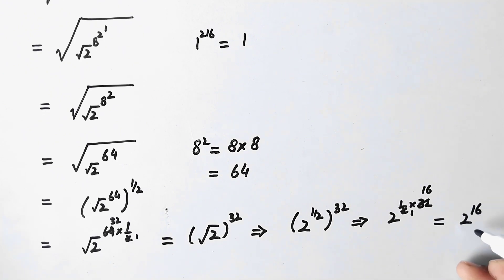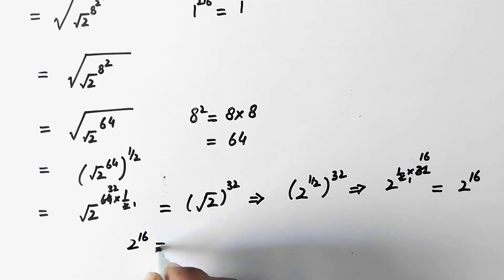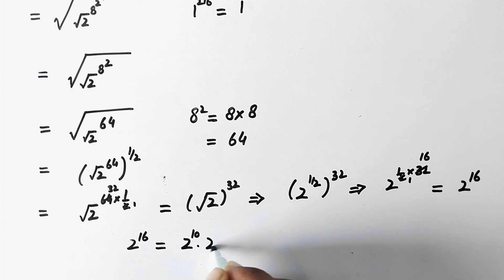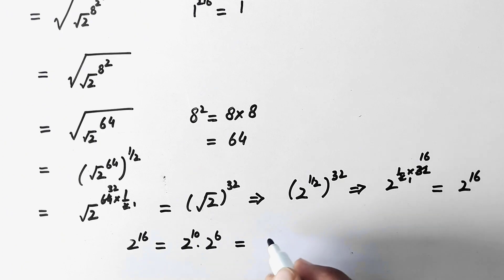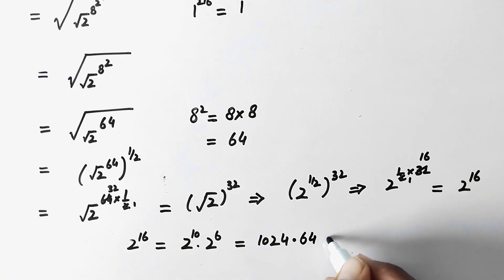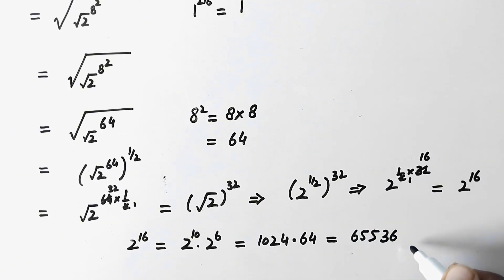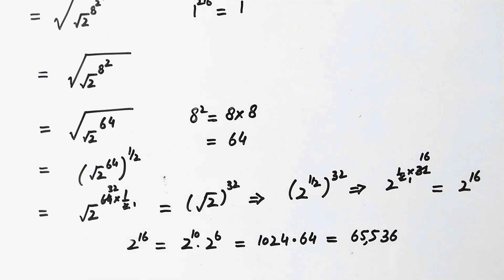So the result is 2 to power 16. To simplify the calculation we write 2 to power 16 as 2 to power 10 times 2 to power 6. Since 2 to power 10 equals 1024 and 2 to power 6 equals 64, multiplying these gives 1024×64 = 65,536. That is our final answer.